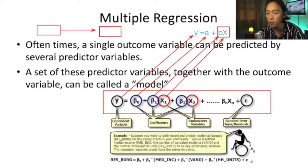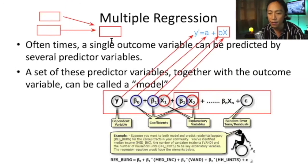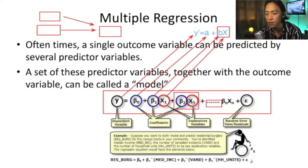Because in multiple regression we have more than one predictor variable, the equation includes an additional coefficient and x value for each additional predictor. The ellipsis means you add on as many as needed — one coefficient-and-x pair for every additional variable. If you have four predictors, you have three additional coefficient-and-x terms in the equation.